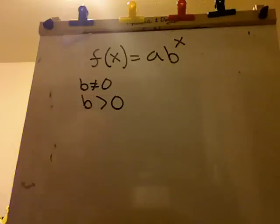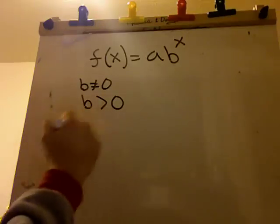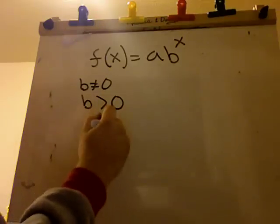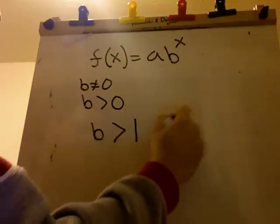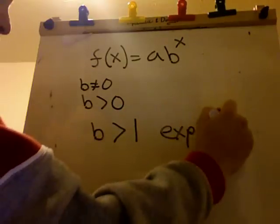Now, it determines those two things. Exponential growth occurs when b is greater than 1. This is exponential growth.